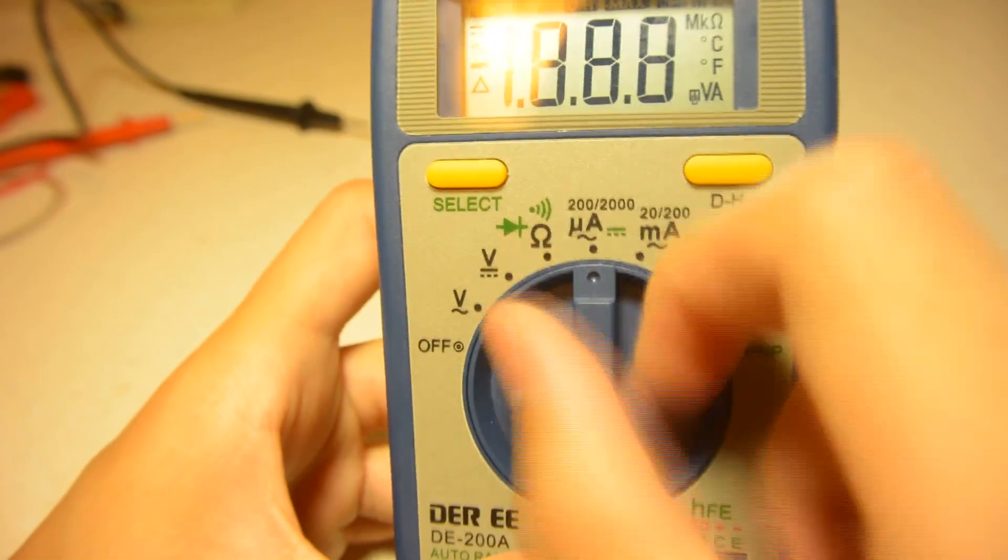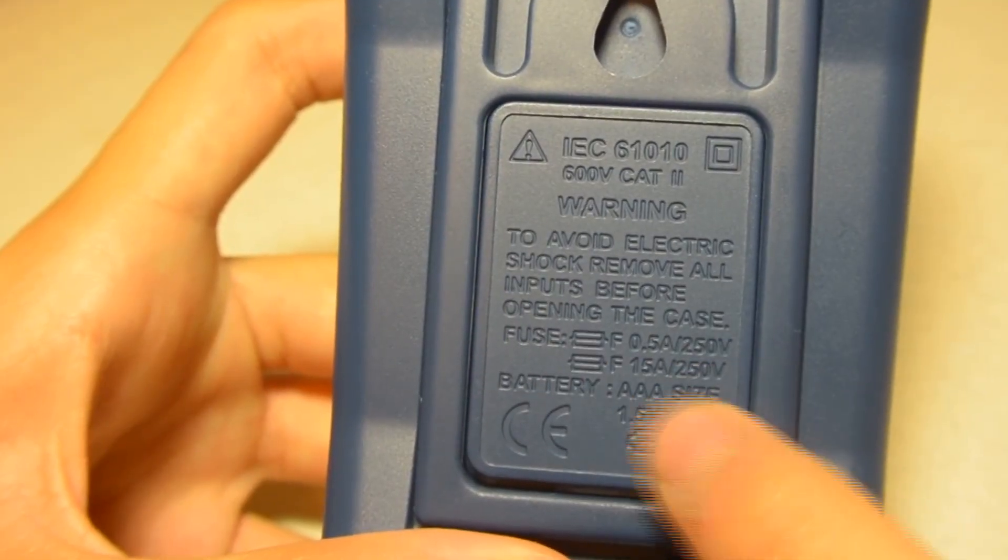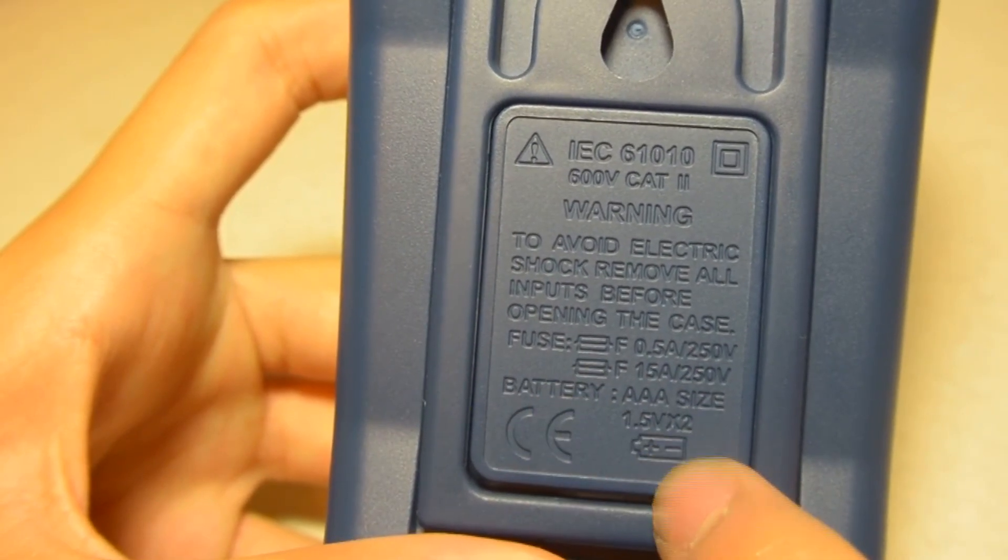First of all, make sure your multimeter can measure DC current. After that, make sure your multimeter is properly fused so you don't destroy your multimeter.